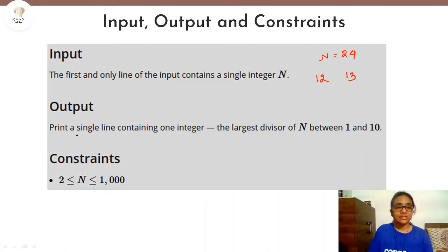Then what you have to print as output is a single line containing one integer, the largest divisor of N between 1 and 10. So you have to print your answer. Like in the previous case, for N equals to 24, our answer was 8. 8 is the largest divisor that divides N between 1 and 10.